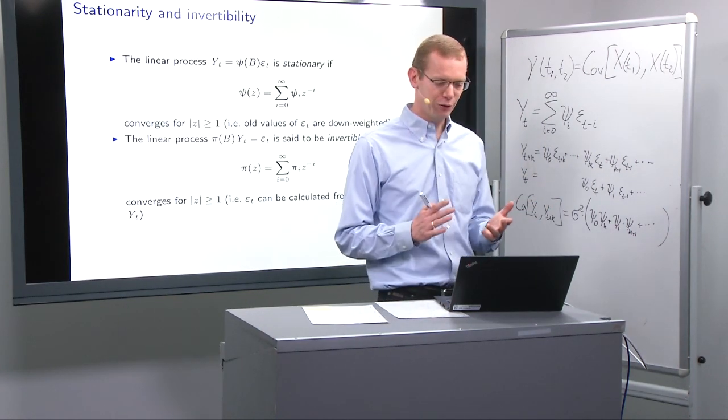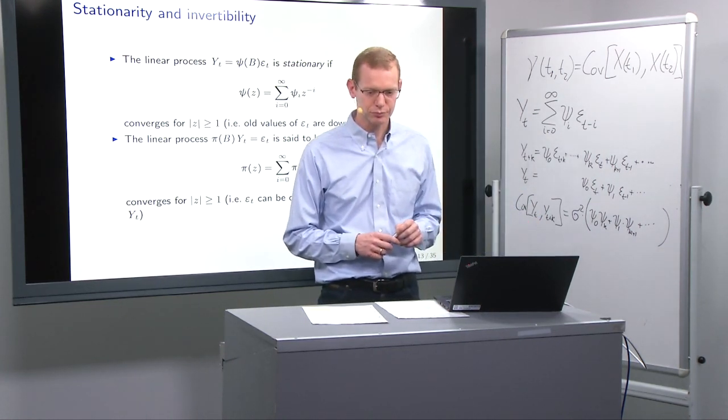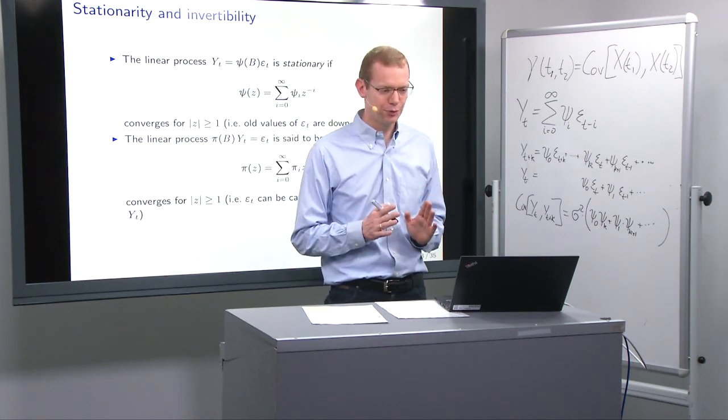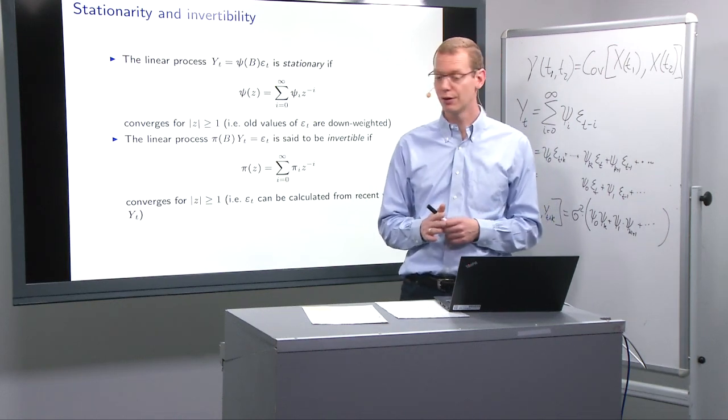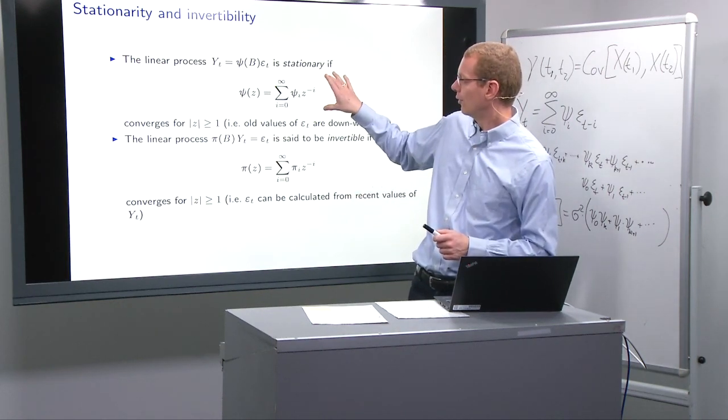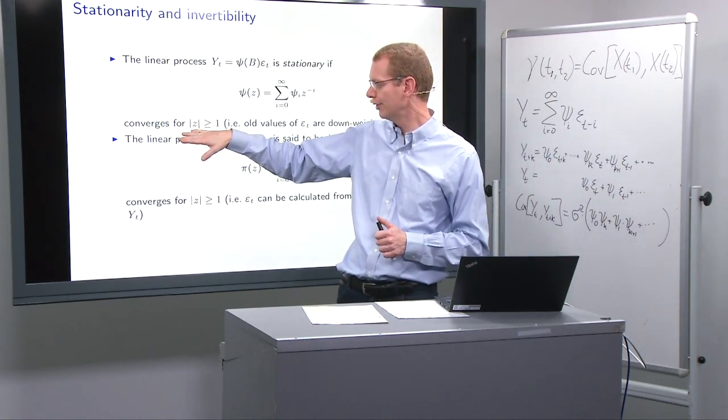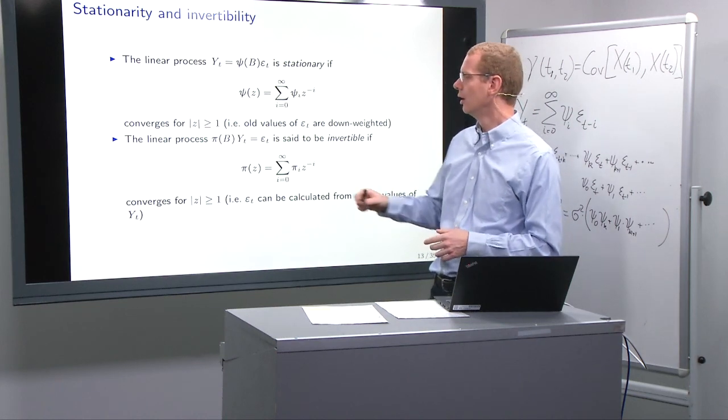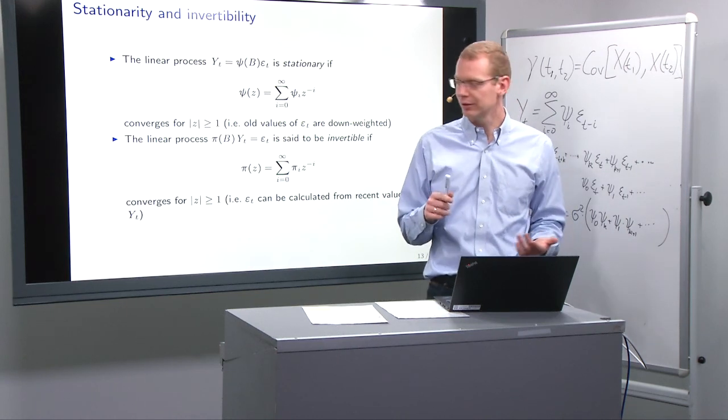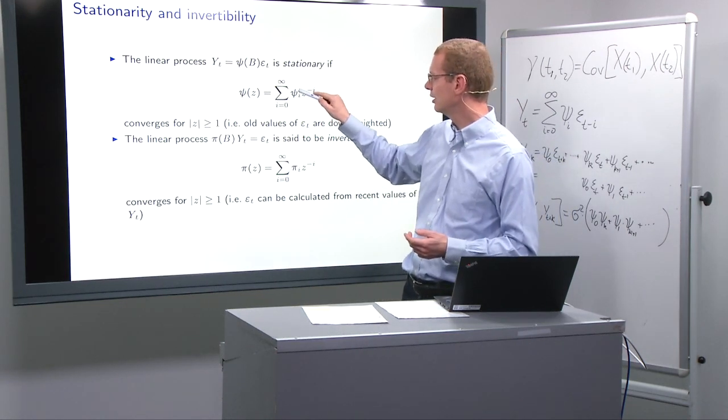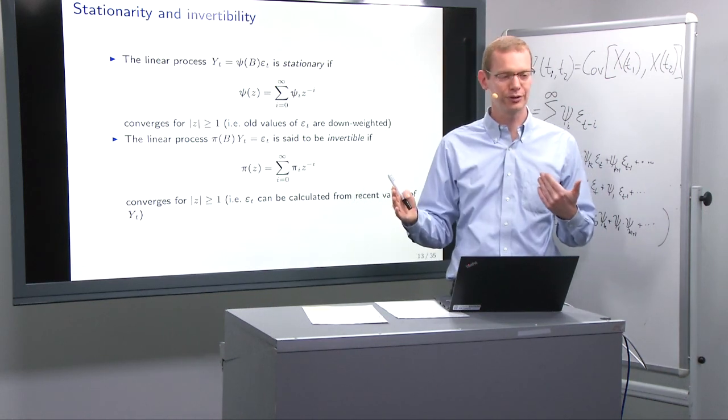Now, as the last bit in the first part here, we look at stationarity and invertibility. A linear process is said to be stationary if and only if we can look at this polynomial, and it converges when the absolute value of z—can be a complex number—is greater than one. So basically what that means is these weights have to go to zero sufficiently fast so that all epsilons are down weighted.